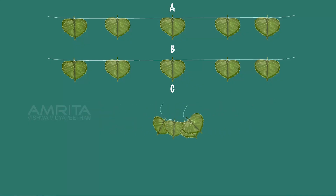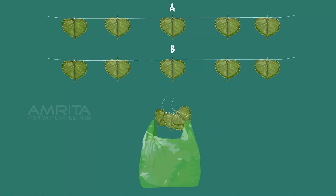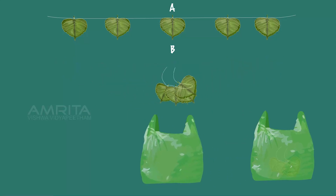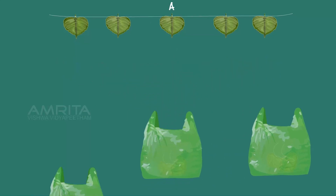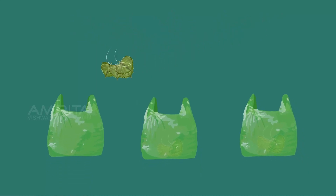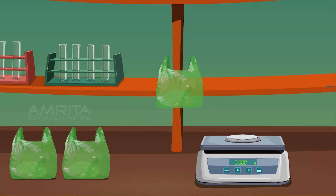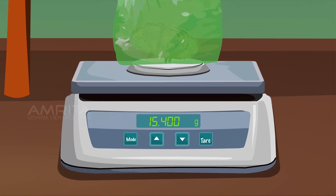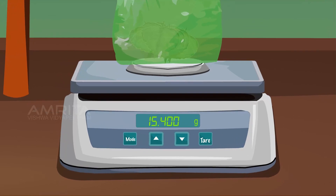Make a bundle of these leaves and pack them in polythene bags. Make 3 such bundles of smeared leaves and mark them as A, B and C. Carefully weigh each bundle of leaves along with the polythene bags and record the values in the table.